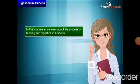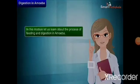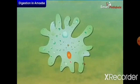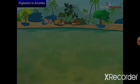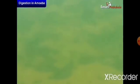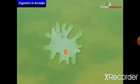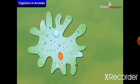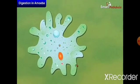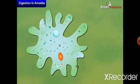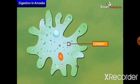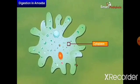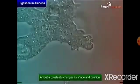The process of feeding and digestion in amoeba is very interesting. Amoeba is a microscopic single-celled organism found in pond water. It does not have a mouth or a digestive system. Amoeba has a cell membrane, a rounded dense nucleus, and many small bubble-like vacuoles in its cytoplasm.